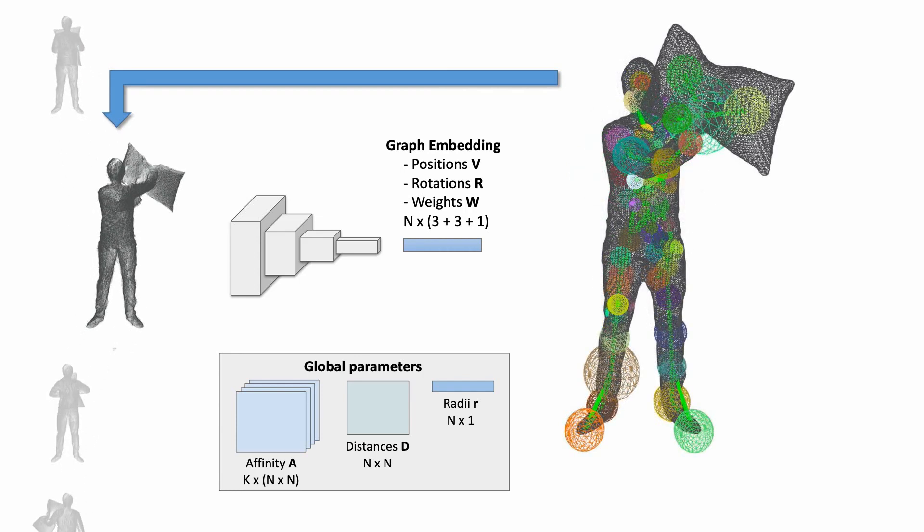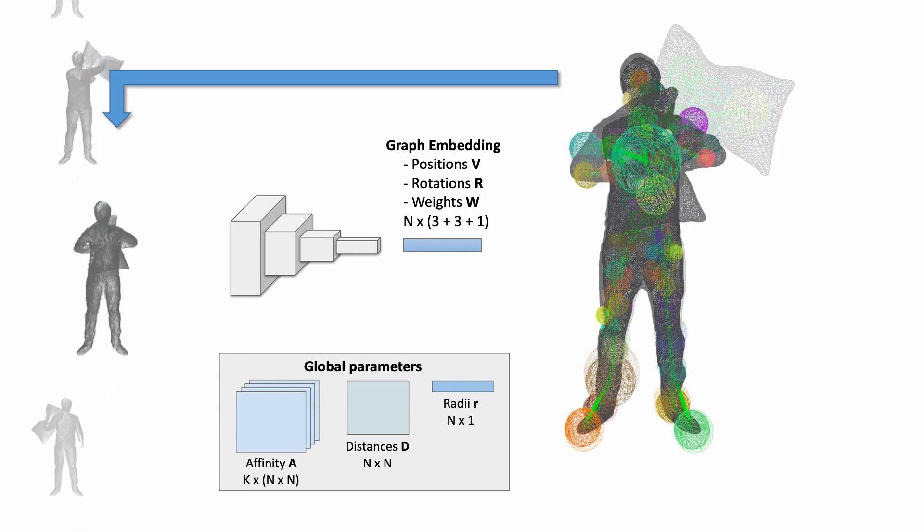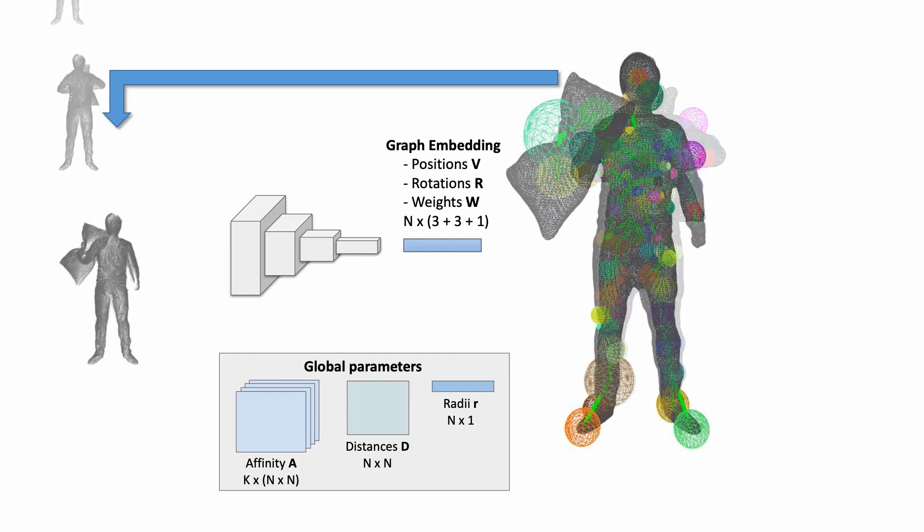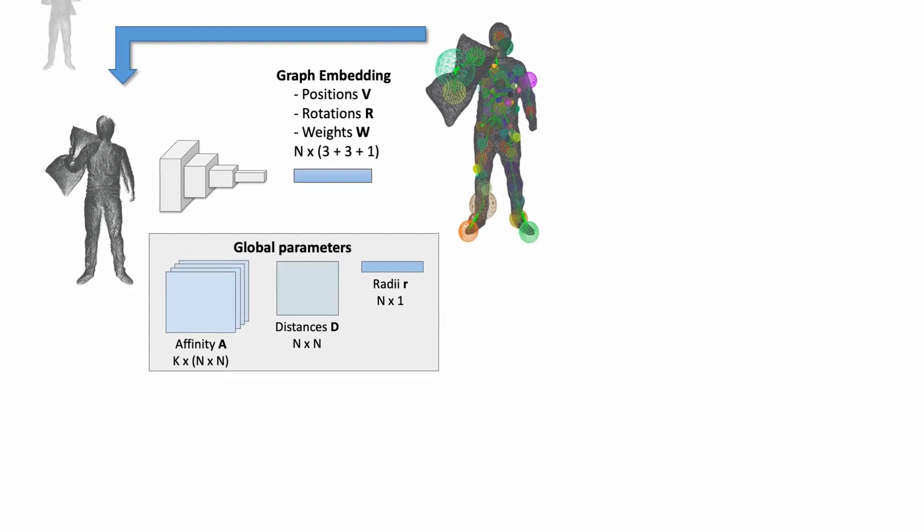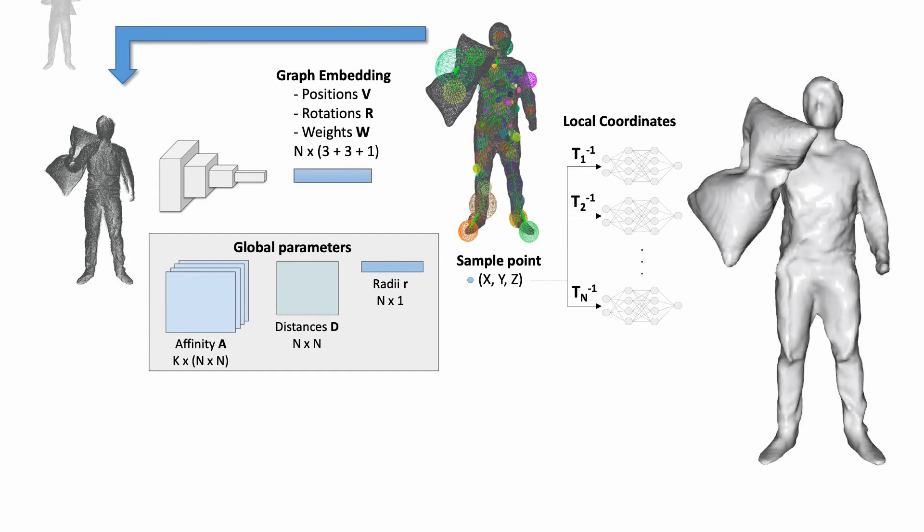The implicit global deformation graph gives access to all graph states in each frame. To reconstruct the non-rigidly deforming surface, we employ local deformation-dependent implicit functions storing the signed distance field. These implicit functions are represented by multi-layer perceptrons.